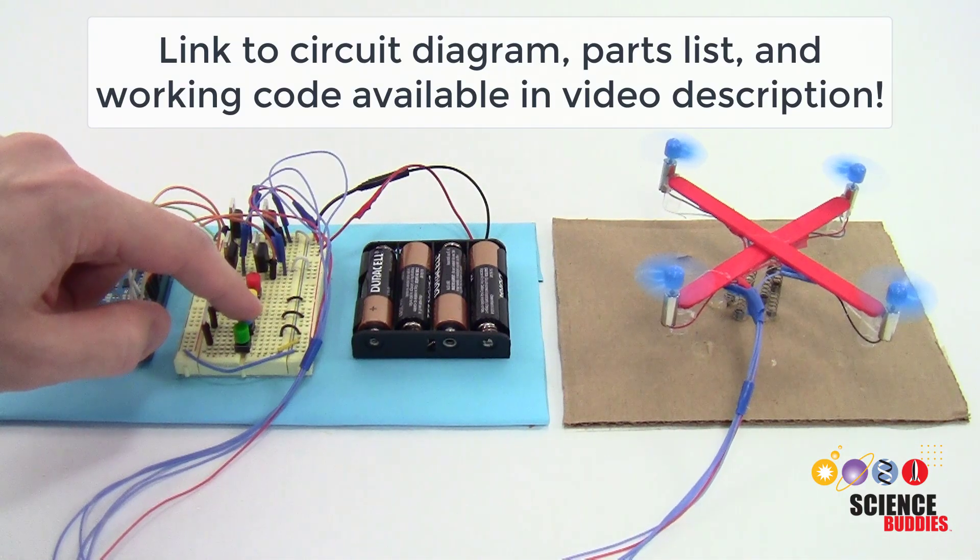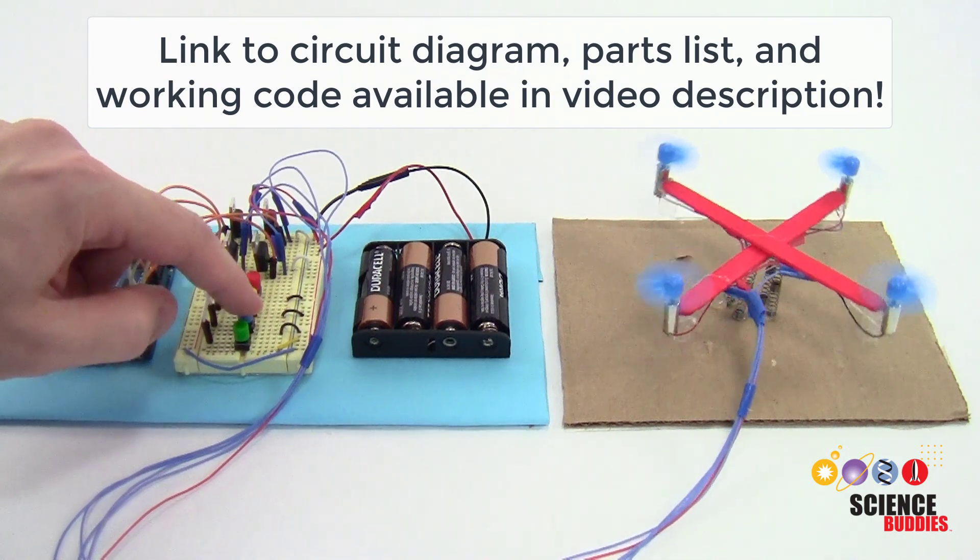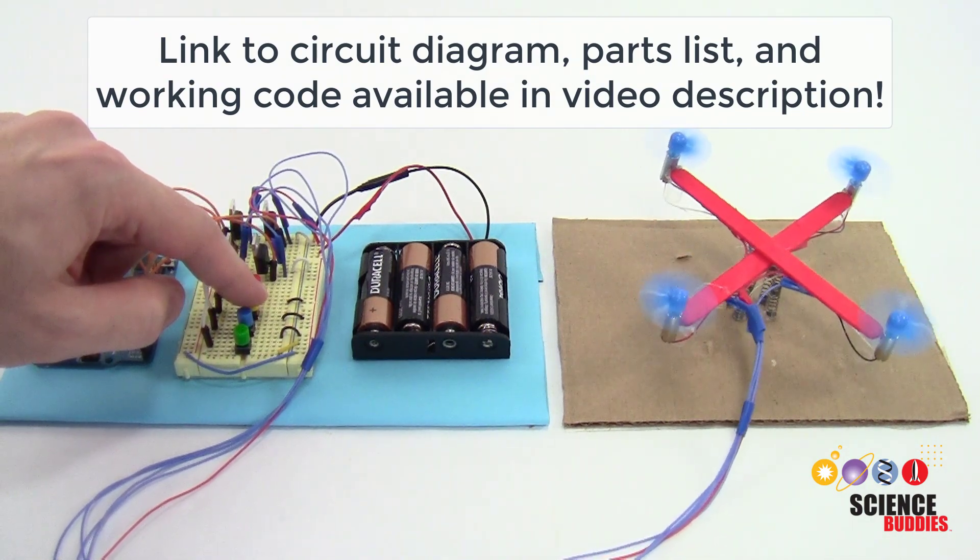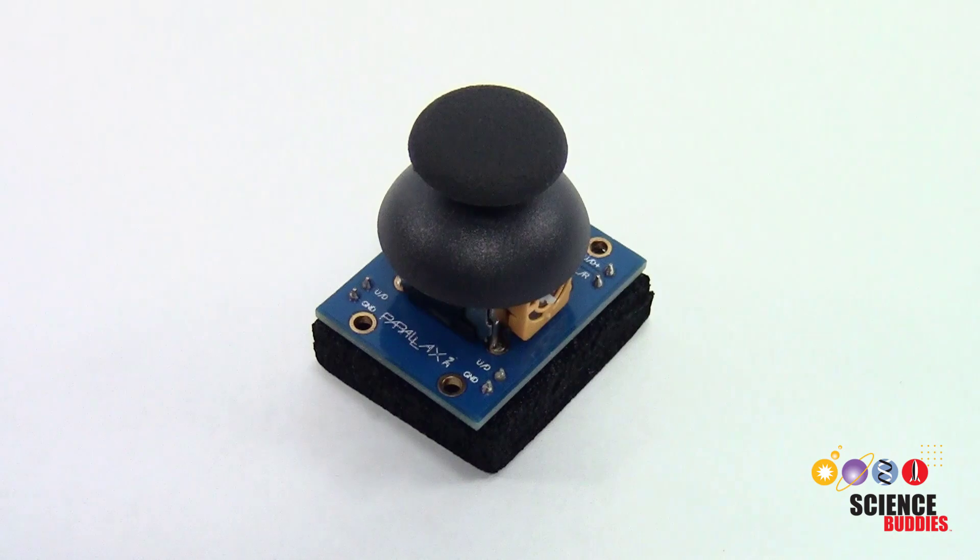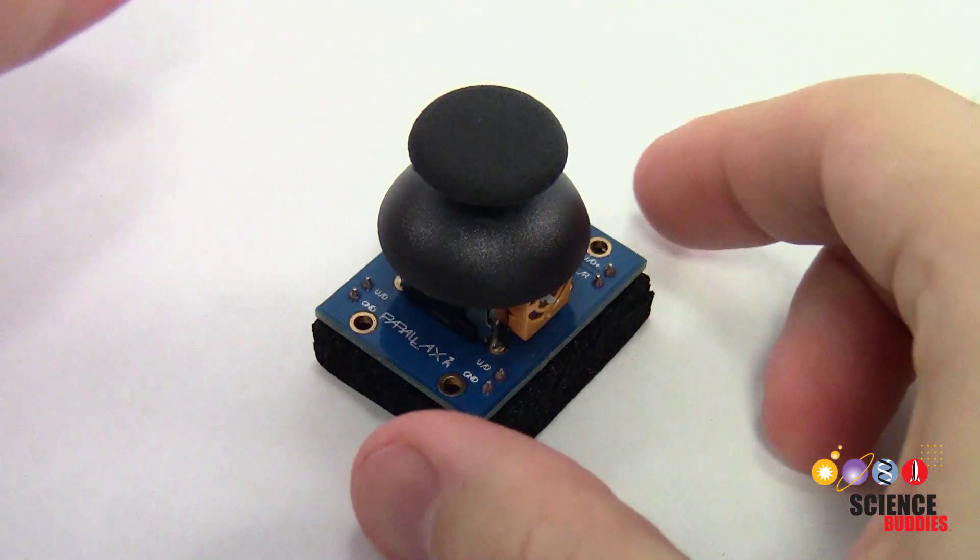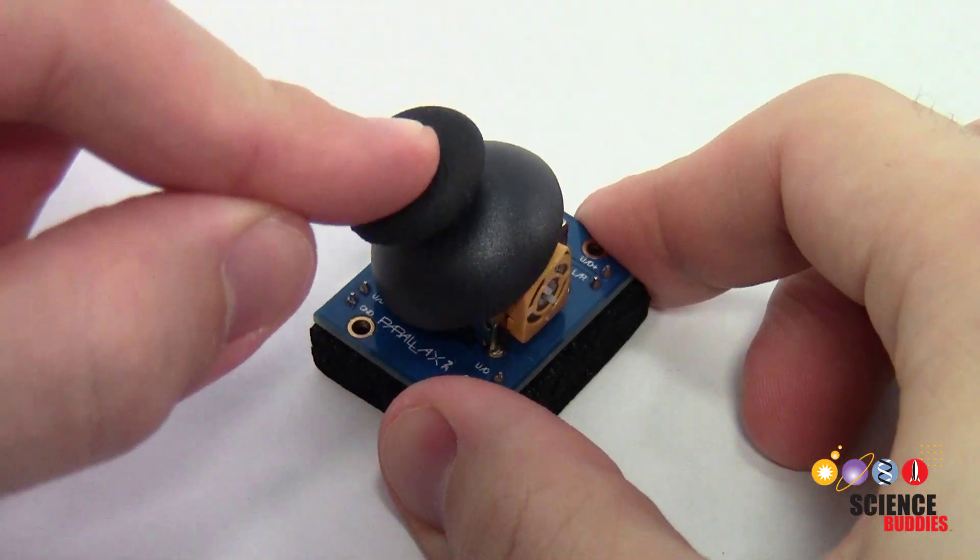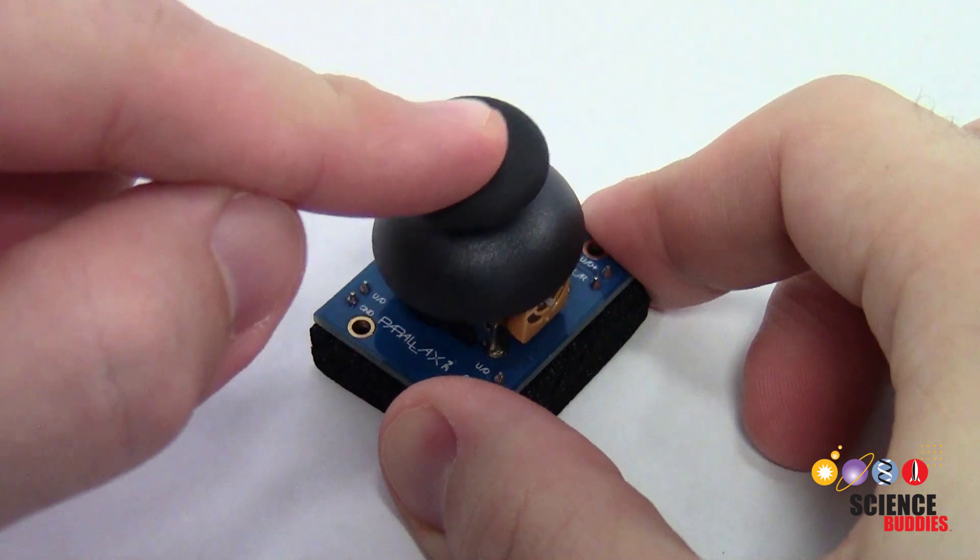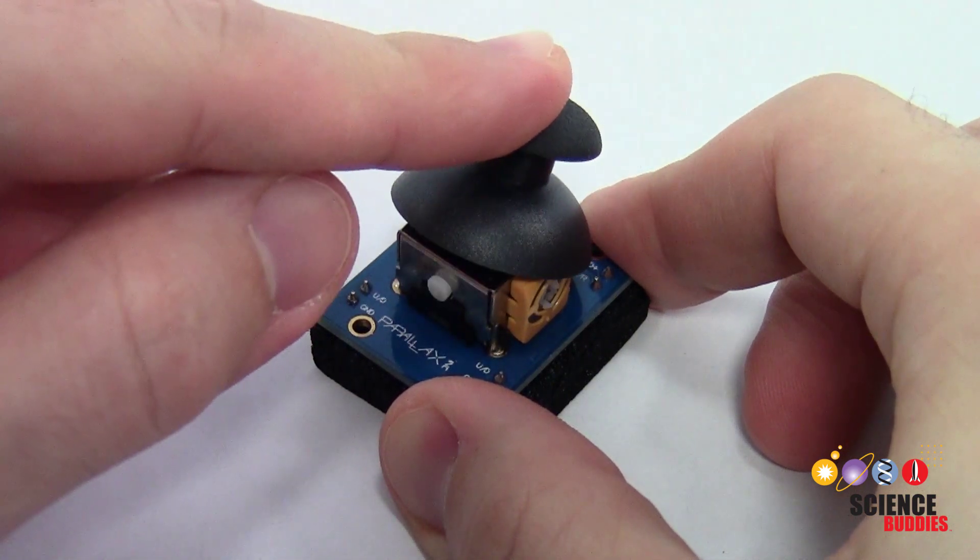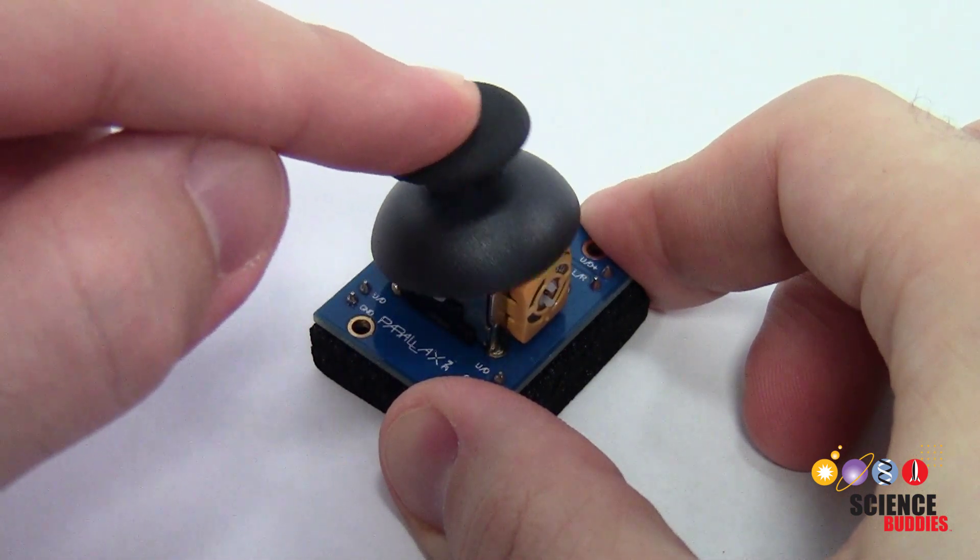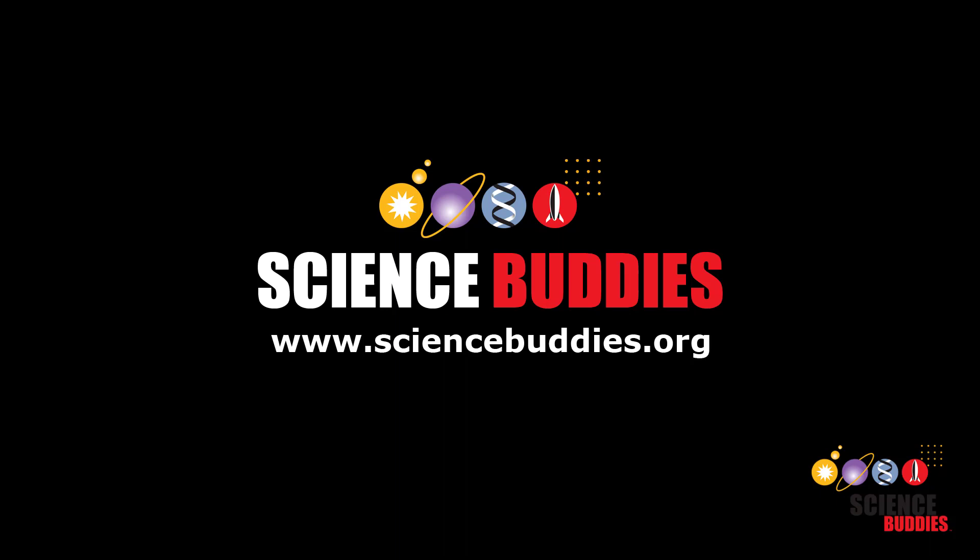Remember that you can go to the link to written instructions in the description below this video for a complete circuit diagram and working code. You can also check out the next video in this series to learn how to replace the buttons with an analog joystick similar to what you would find on a real drone controller or a video game controller. For instructions for thousands of other fun hands-on science and engineering projects, visit us online at www.sciencebuddies.org.